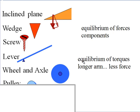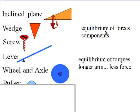Those two machines make the second family, where instead of an equilibrium of forces, you're doing an equilibrium of torques. This one is translational, these three, these two are rotational, and you get the advantage by, with a longer arm, it takes less force, less effort, to produce the same torque.